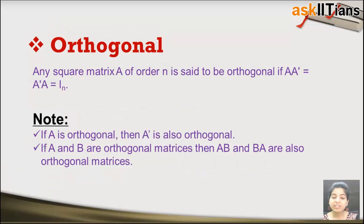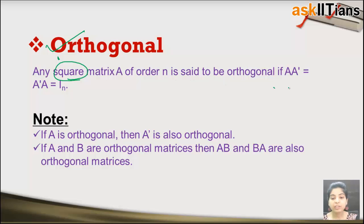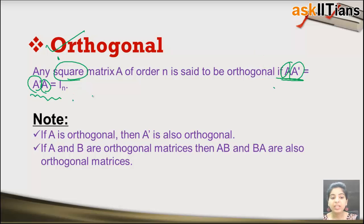These matrices have quite simple definitions, but you are likely to get confused between them, so it's better to revise them again and again and solve questions based on them. Next is the orthogonal matrix: a square matrix A of order n is said to be orthogonal if A·A^T equals A^T·A equals the identity matrix I.